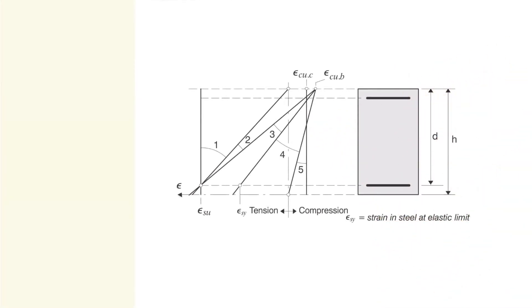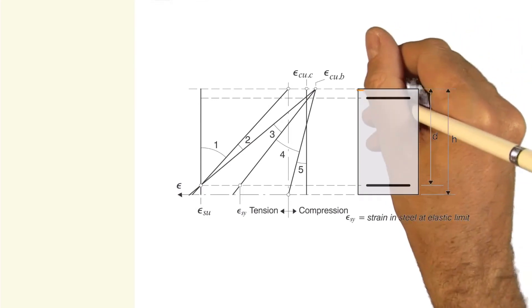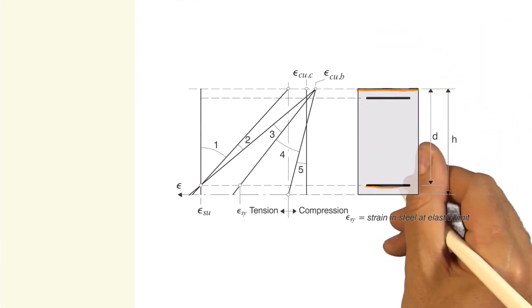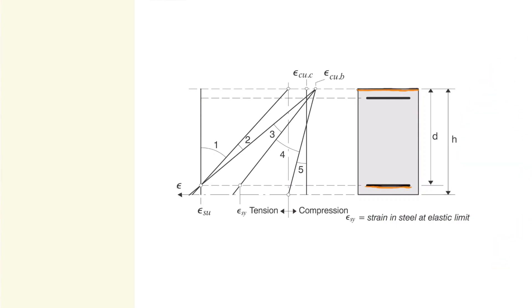At the point in which a cross-section reaches its limiting resistance, the extreme fiber of the concrete on the compression side or in the extreme reinforcement position on the tension side will reach a certain value.